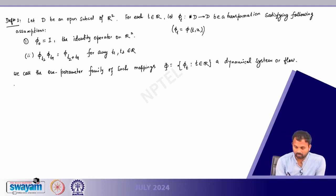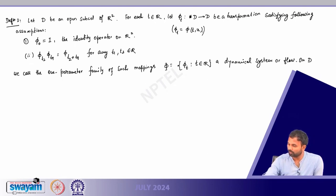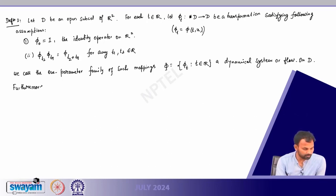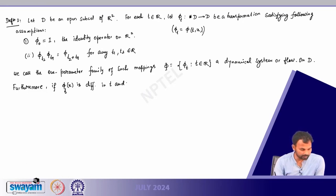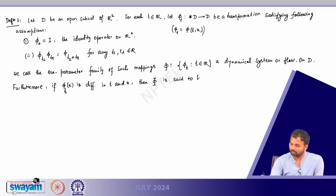Furthermore, if phi_T(x) is continuously differentiable in T and x, then phi is said to be a continuous dynamical system.